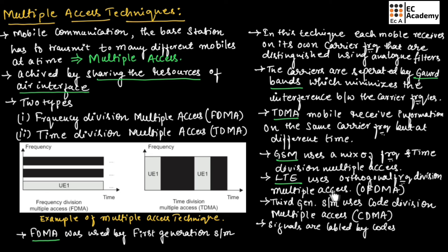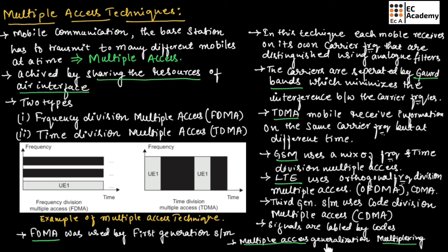LTE also uses the concept of CDMA. Multiple access is actually a generalization of a simpler technique known as multiplexing. However, there is a difference: in multiple access, the system can dynamically change the allocation of resources to different mobiles, while in multiplexing the allocated resources are fixed and cannot be changed.